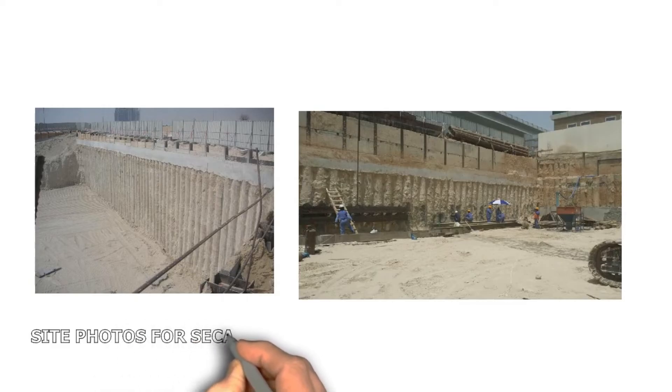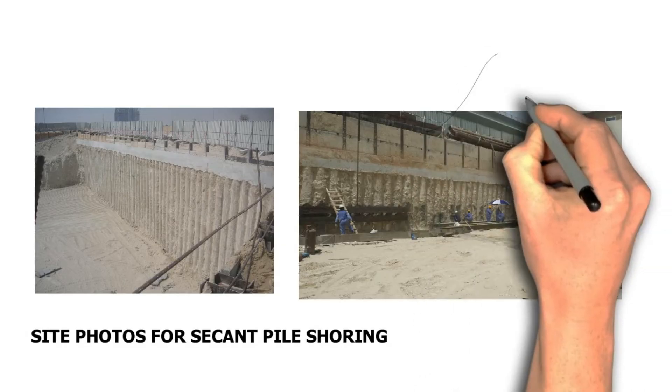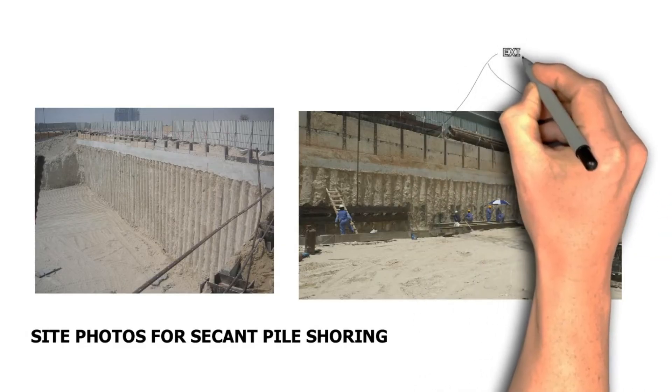Secant piles are the best choice to use when there is no room for open excavation, or when space is limited because of an existing structure that is too close in proximity.